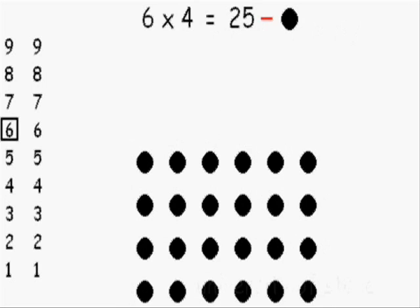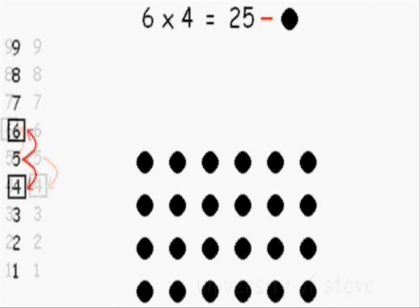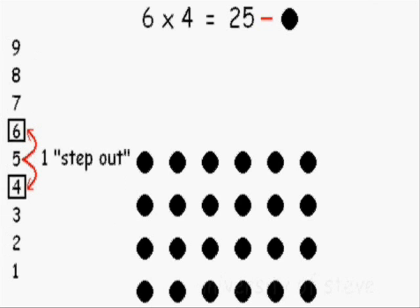6 was 1 step up from 5, and 4 was 1 step down from 5. If we put the lines together, you can call it 1 step out.